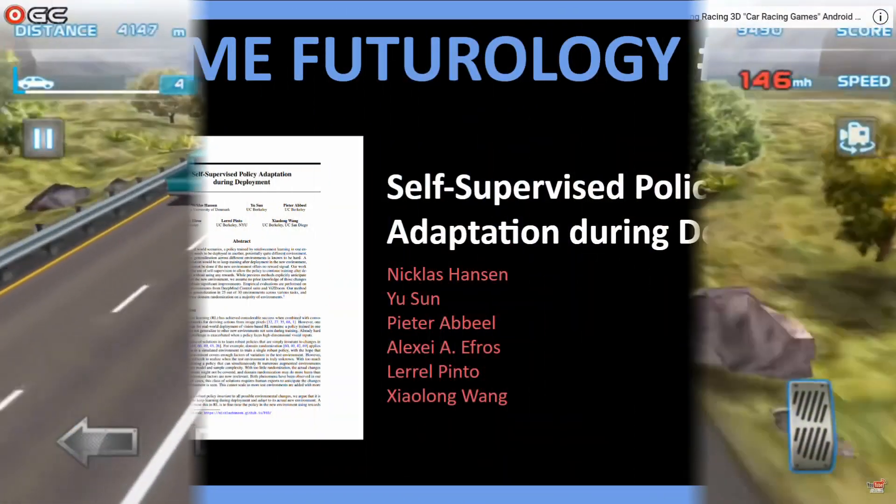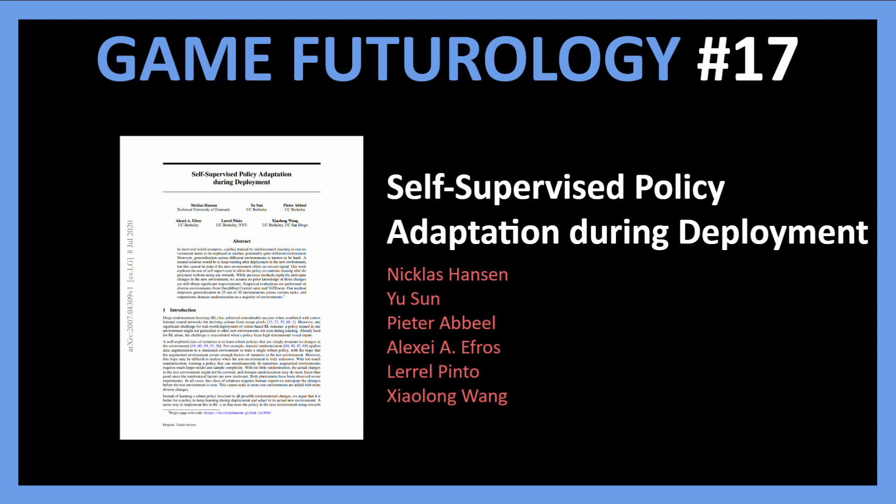So today, I want to share a paper that tries to tackle this problem and introduces adaptability to RL agents so that they too can play multiple games with different graphics just like humans. It is titled 'Self-Supervised Policy Adaptation during Deployment,' and this promises to make it much easier to train RL agents on a specific game and then port them over to different games that belong to the same genre.